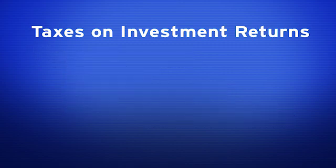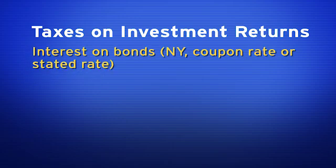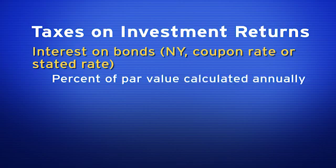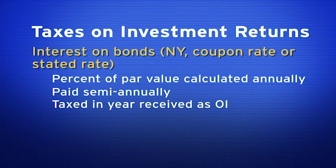What type of income would I earn on bonds? Interest. The interest rate is known as the nominal yield, the coupon rate, or the stated rate. The interest is a percent of par, calculated annually, paid semi-annually. Bond interest would be taxed in the year received as ordinary income at your marginal tax rate. There is no reduced tax rate on bond interest.